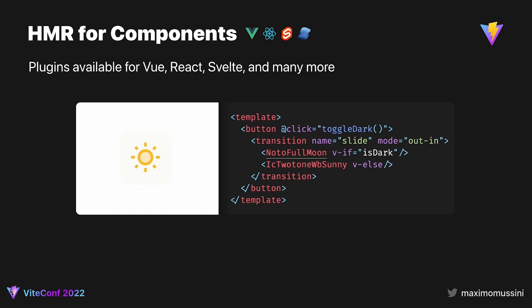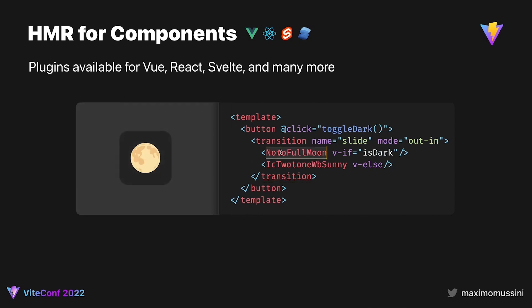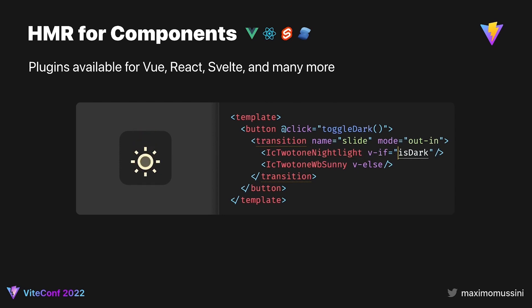If you have used Webpack, this one should ring a bell. When working with frameworks like Vue or React, changes to a component will be applied without re-rendering other parts of the application, which is great for large apps. Vue, in particular, provides a fantastic experience by skipping re-renders if you only change styles, and preserving local state if only the template has changed. This makes iterating in development very fast and enjoyable.